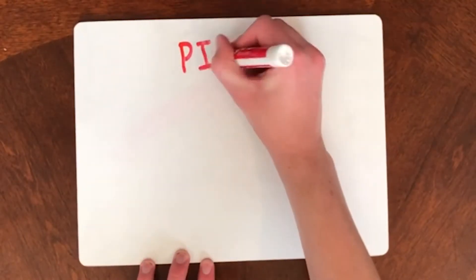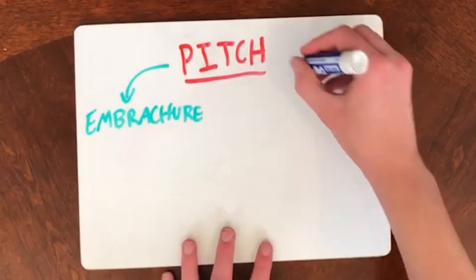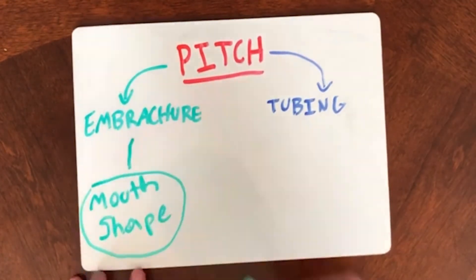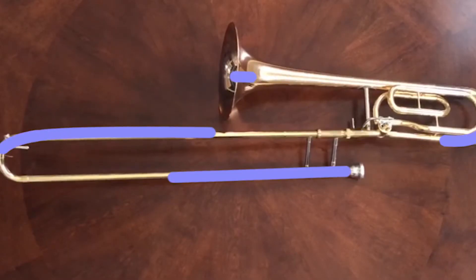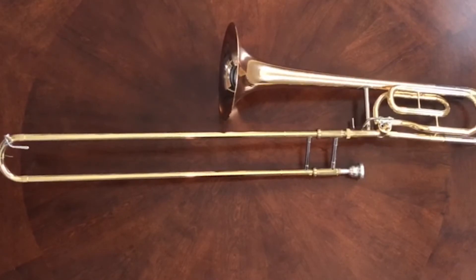There are two main ways to change this frequency: your embouchure and the tubing length. Embouchure is the shape of your mouth when you play the trombone. Pressing the lips tighter together will create faster frequencies and thus increase the pitch, while blowing with loose lips will cause slower frequencies and therefore decrease the pitch.